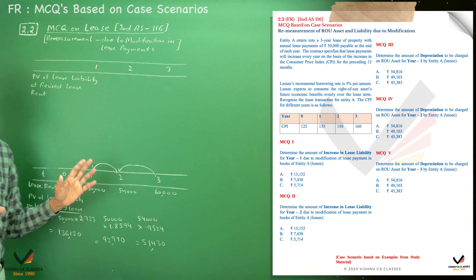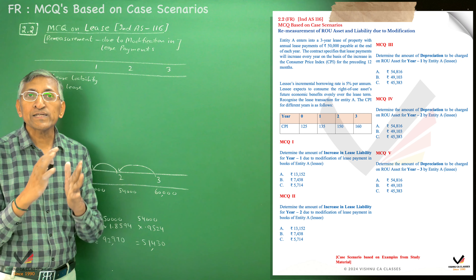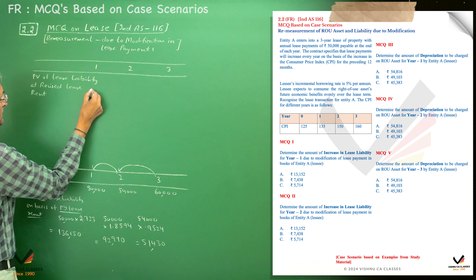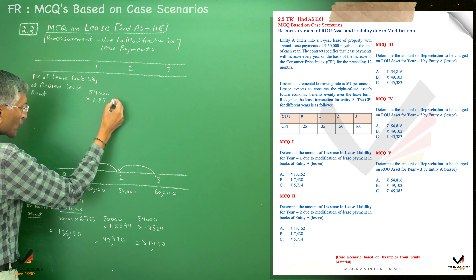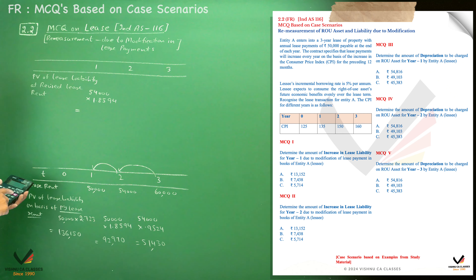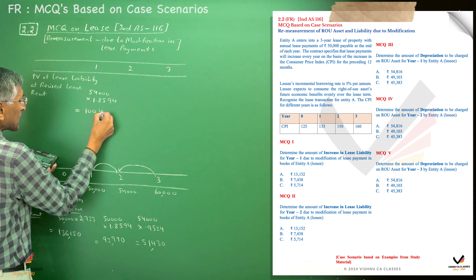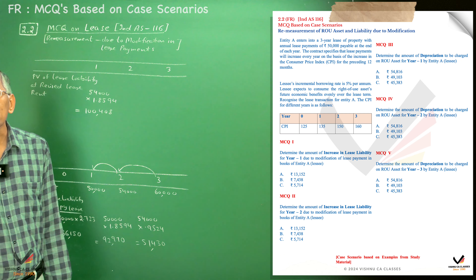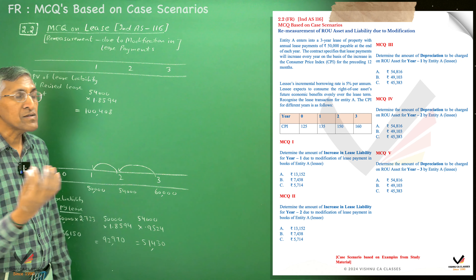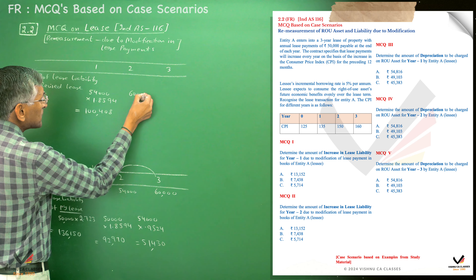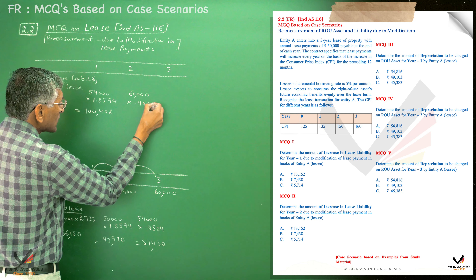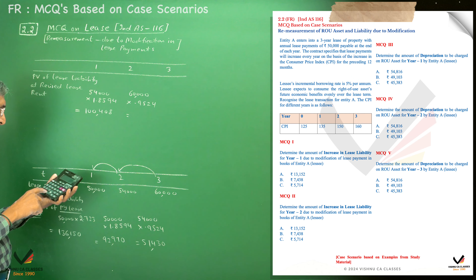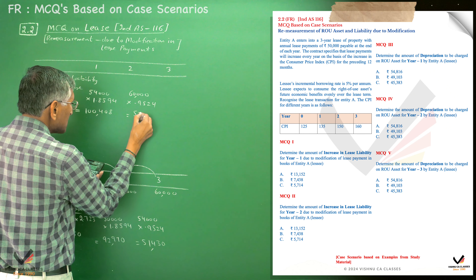In the first year we considered the original lease rent of Rs. 50,000. Now we know the second year lease rent is Rs. 54,000. After the index change at year 1, the revised PV factor is 1.8594. So the revised liability is 54,000 × 1.8594 = Rs. 100,408. At the end of second year, the third year lease rent is Rs. 60,000. The revised liability is 60,000 × 0.9524 = Rs. 57,144.